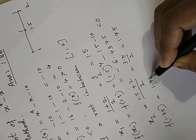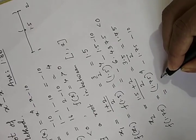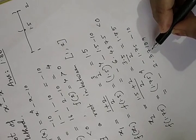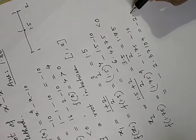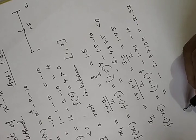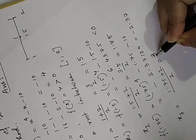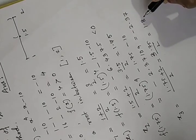f(1.75) = 1.75 to the power 4 minus 1.75 minus 10, which equals approximately minus 2.37. So this is also negative.